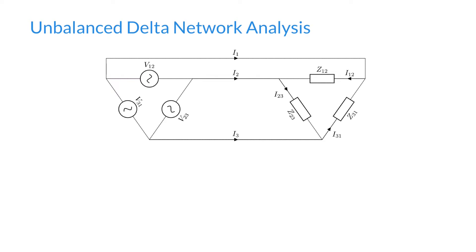If you haven't watched our previous video on the balanced delta network, I would suggest doing that first because we're going to jump straight in from where we left off there. In our previous video we saw these three equations for line currents I1, I2 and I3.